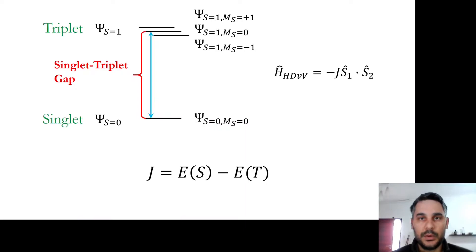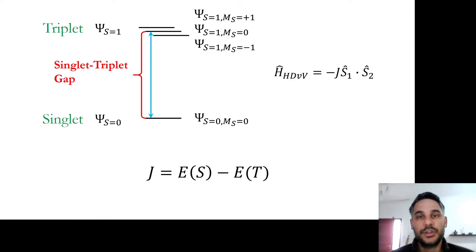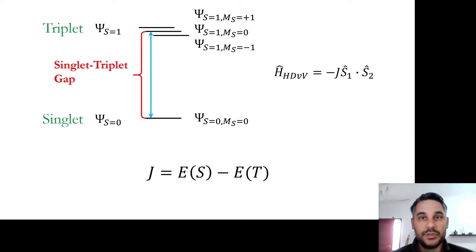But how do we calculate that within DFT, which is a single-determinantal electronic structure method? We need to use broken symmetry solutions because those are single-determinant wave functions.